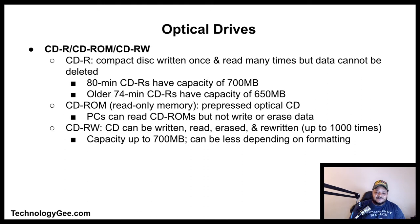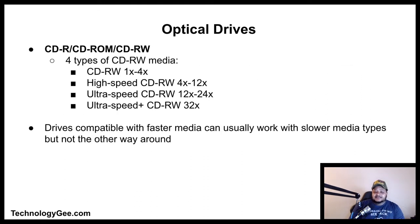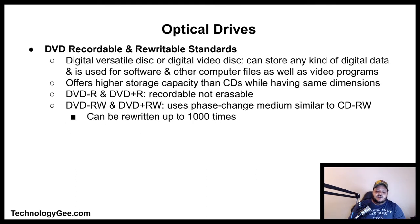There are four types of CD-RW media: CD-RW 1x–4x, High Speed CD-RW 4x–12x, Ultra Speed CD-RW 12x–24x, and Ultra Speed Plus CD-RW at 32x. Drives compatible with faster media types can usually work with slower media types, but not the other way around.